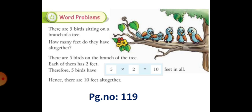Next, word problems. Page number 119. There are 5 birds sitting on a branch of a tree. How many feet do they have altogether? We want to find the answer. Is it in multiplication? So there are 5 birds on the branch of a tree. Each of them has 2 feet.